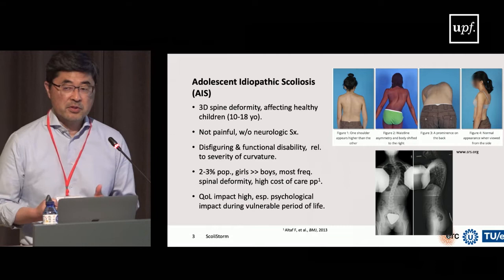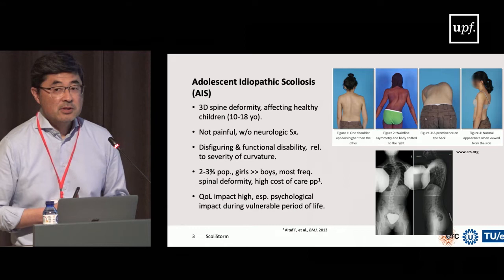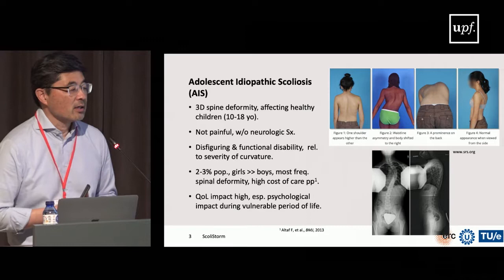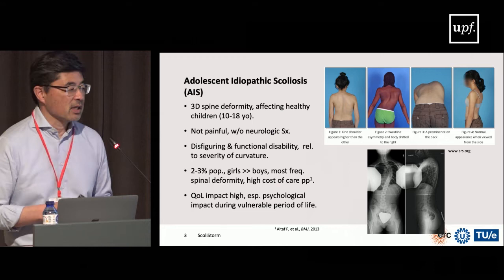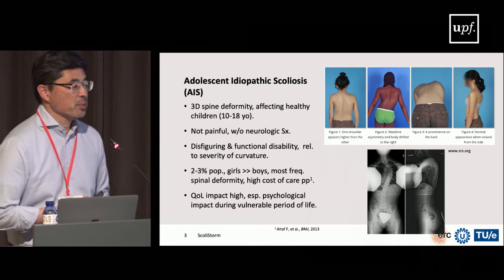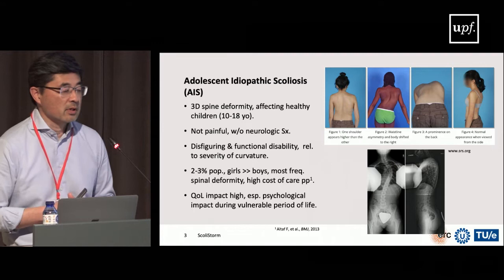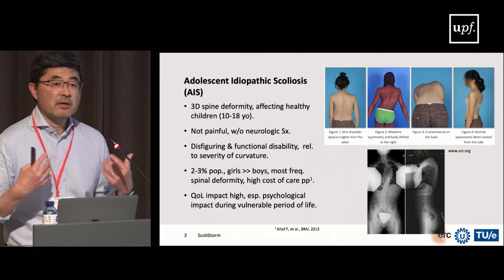AIS is not a very prevalent disease — it affects only about two to three percent of the population, and is much more prevalent in girls than in boys. It doesn't have a very high societal burden, and maybe that's why not many people study it. But the cost per patient is relatively high, the impact on quality of life is very high, and there's a huge psychological cost — especially because it hits adolescents at a time when people are very vulnerable and trying to figure out who they are.